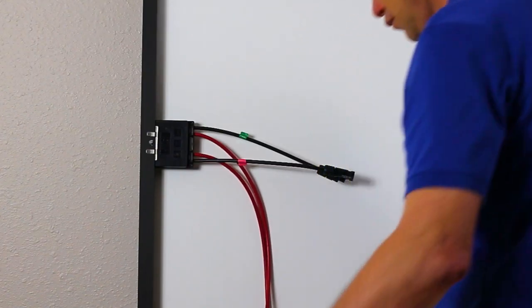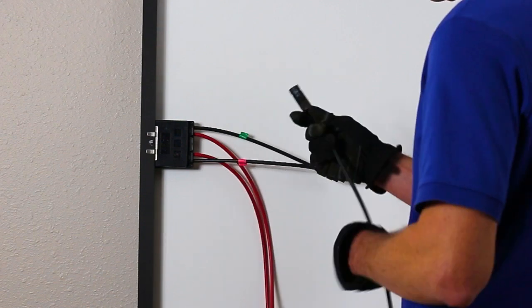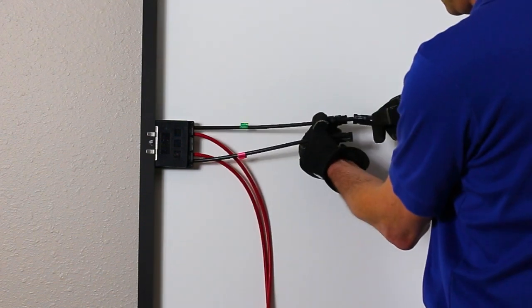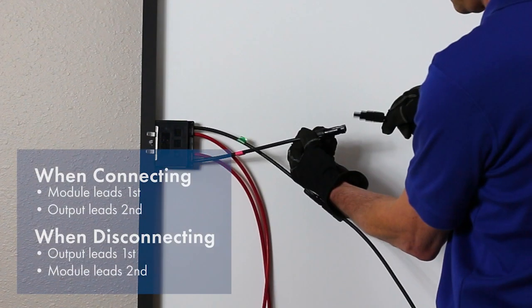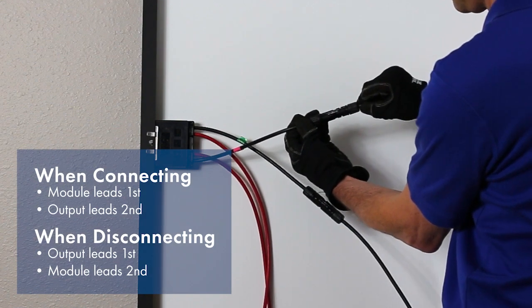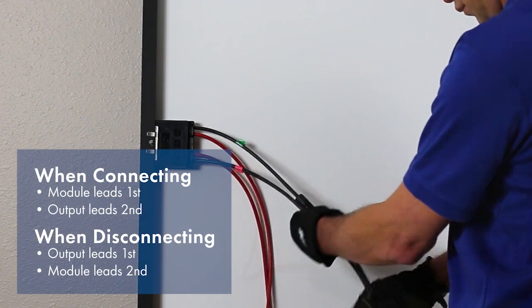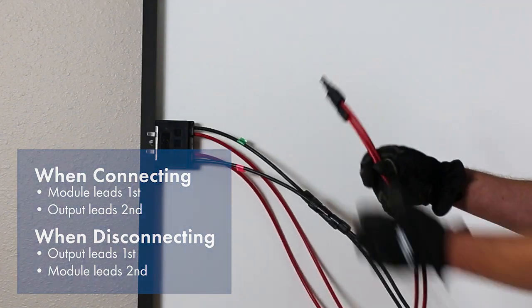Once the receiver is installed, the module junction box leads are attached to the short black JMS input leads. Please note the module connection must be made before the red output leads are connected. If the unit needs to be removed, the output leads must be disconnected first.